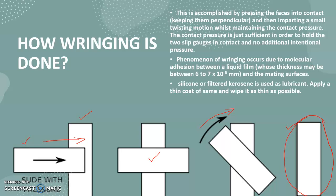This phenomenon of ringing occurs due to molecular adhesion between a liquid film and the mating surface. The silicon or filtered kerosene is used as the lubricant.